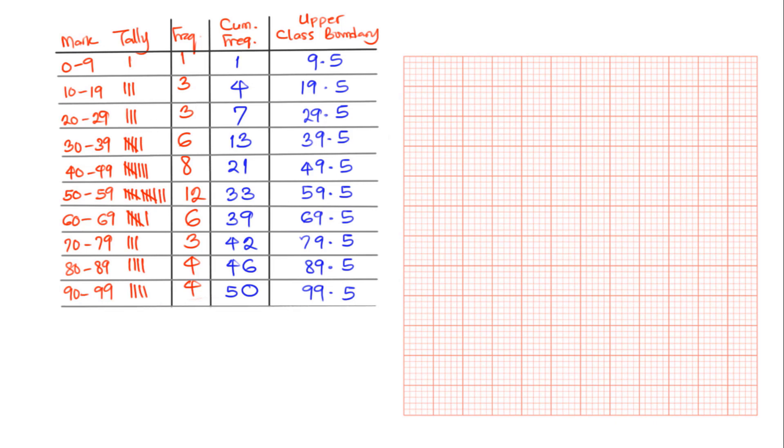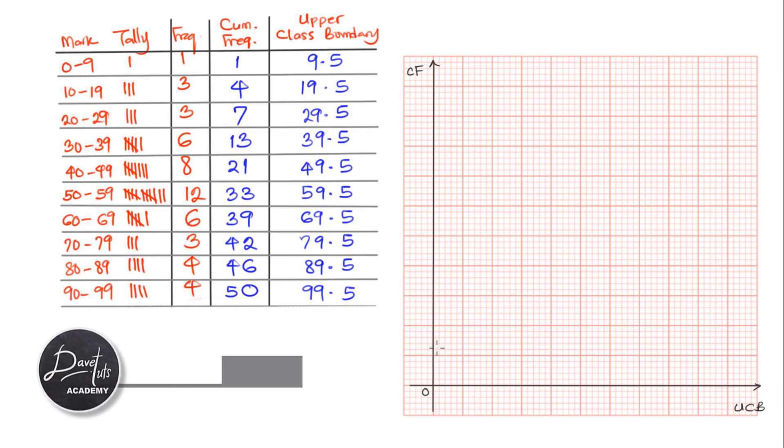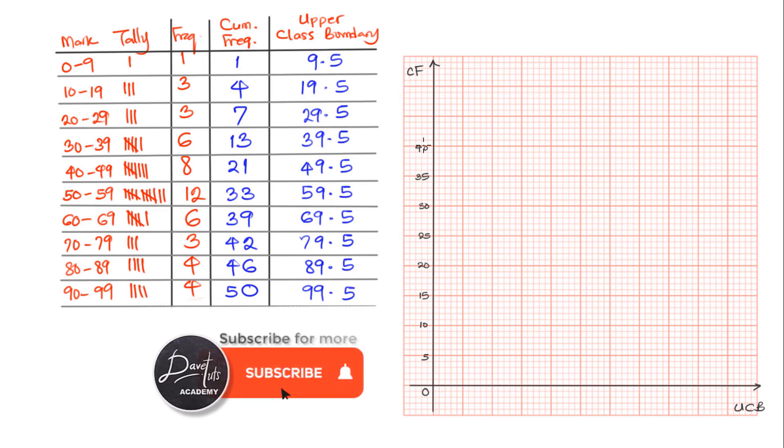Now we are going to be plotting our cumulative frequency curve by plotting the cumulative frequency on the vertical axis and the upper class boundary on the horizontal axis. We are concerned about what scale do we need to use. Here we are having entries from 1 to 50, so our scale should be able to cater for that. If we look at the divisions on our graph and we have decided to append in units of 5, we can see 25, 30, 35, 40, 45, 50. That caters for all the data entry that we have.